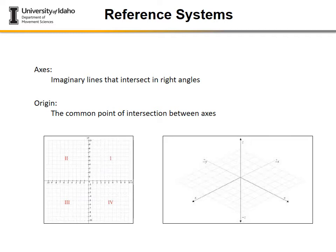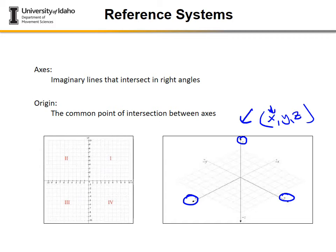Dealing with human motion, we work in three dimensions, typically using x, y, and z. Depending on the laboratory or reference system used, x might mean medial-lateral or anterior-posterior. Most of the time nowadays, z or 'zed' represents the vertical component, though z can sometimes represent a different plane. For our purposes, we'll use x, y, and z, with x and y sometimes switched depending on orientation.